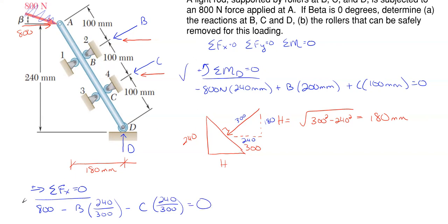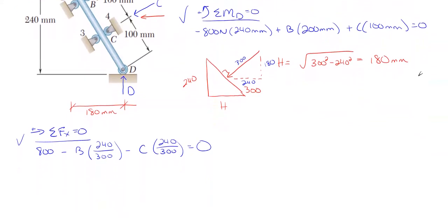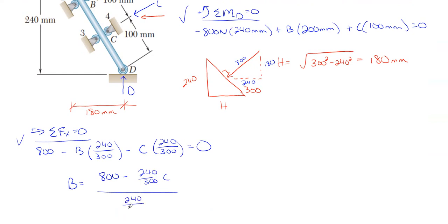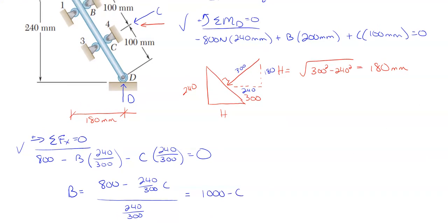Now I have two equations with B and C as unknowns. I'll solve the X equation for B in terms of C: rearranging gives B equals 1000 minus C. So B is simply 1000 minus C.